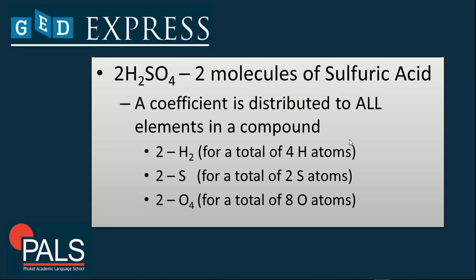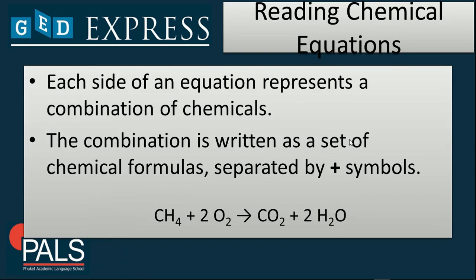A coefficient is distributed to all elements in a compound. For example, if you have 2H2, that would be for a total of four hydrogen atoms. If you say 2S, that would be for a total of two sulfur atoms. If you have 2O4, that would be a total of eight oxygen atoms. You just need to multiply the coefficient with a subscript to give you the total number of atoms present in the chemical formula.